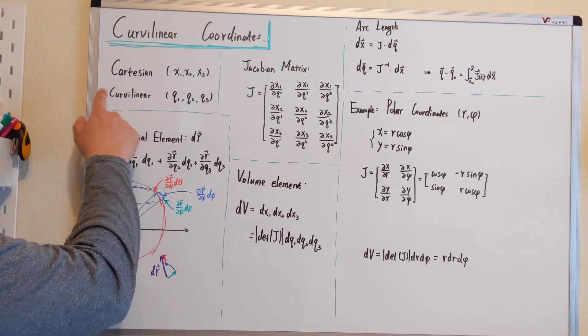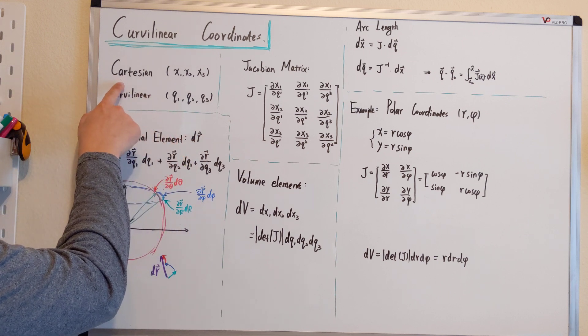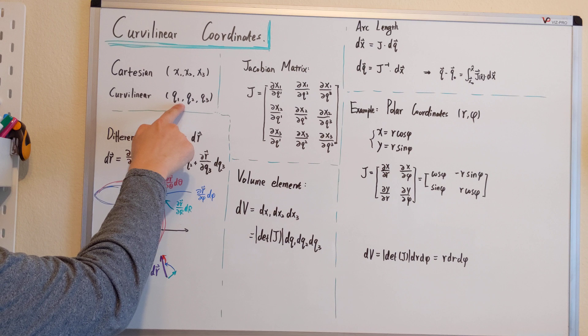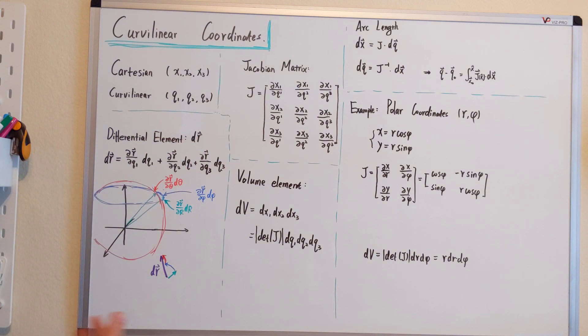For the future discussion, we'll set the Cartesian coordinate as x1, x2, x3, and the curvilinear as q1, q2, q3. It can be extended to n-dimensional.